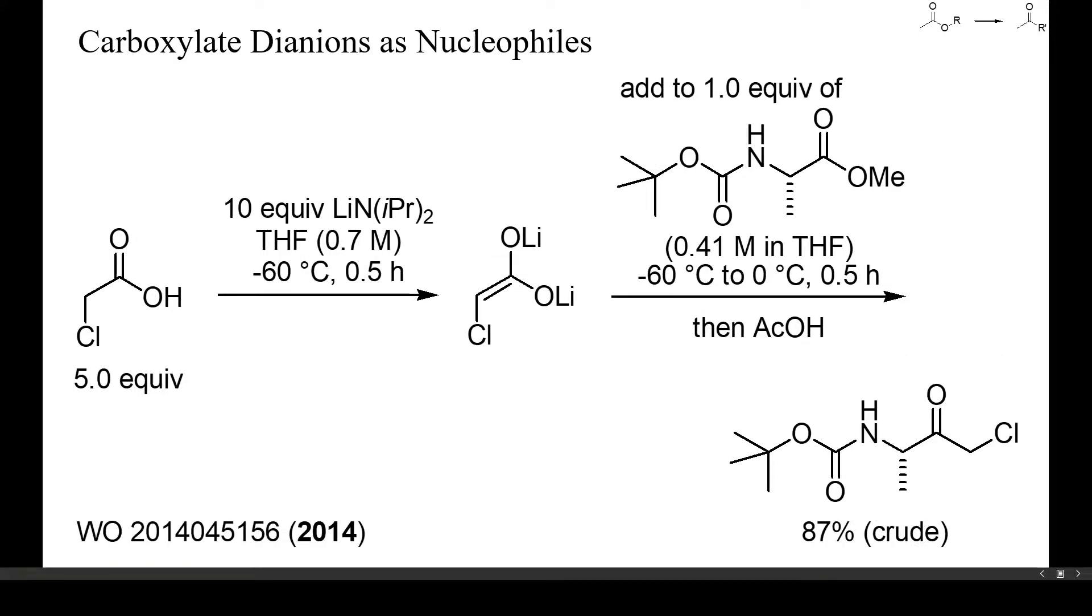Carboxylic acids with alpha-hydrogen can be deprotonated twice, and the resulting di-anions are powerful nucleophiles. In this example, Boc-alanine methyl ester was converted into a chloromethyl ketone by treatment with an excess of the di-anion of chloroacetic acid. The intermediate beta-ketocarboxylic acid decarboxylated spontaneously during work-up. Thus, the di-anion of chloroacetic acid played here the role of a chloromethyl anion. Chloromethyl ketones are valuable enzyme inhibitors and synthetic intermediates.